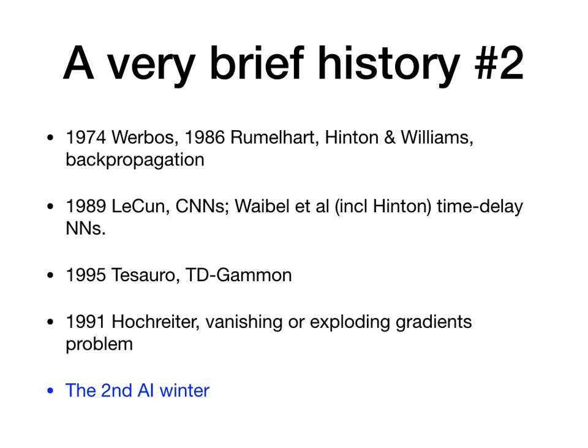Then in 1991, Hochreiter identified the vanishing or exploding gradients problem. This essentially says that if you have many layers — maybe even only about 10 layers — backpropagation can't be used to train them anymore. Either the derivatives of the error with respect to the weights vanish or they explode. Because of this, large neural networks couldn't be built, and in particular problems that needed memory — like time-delayed and recurrent neural networks — didn't work very well. This is said to have ushered in the second AI winter. From about the early 90s, it was difficult again to get funding in neural networks and to get papers published.